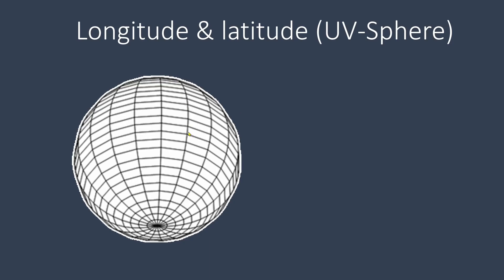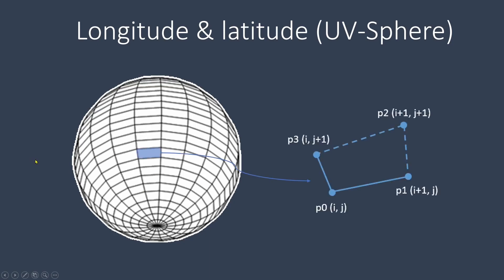U-segments and V-rings form grids on the sphere surface. To create a 3D sphere, we can focus on just one unit grid, as shown here. This grid represents a small section of the overall sphere and allows us to easily generate the vertices and triangles needed for the wireframe representation.